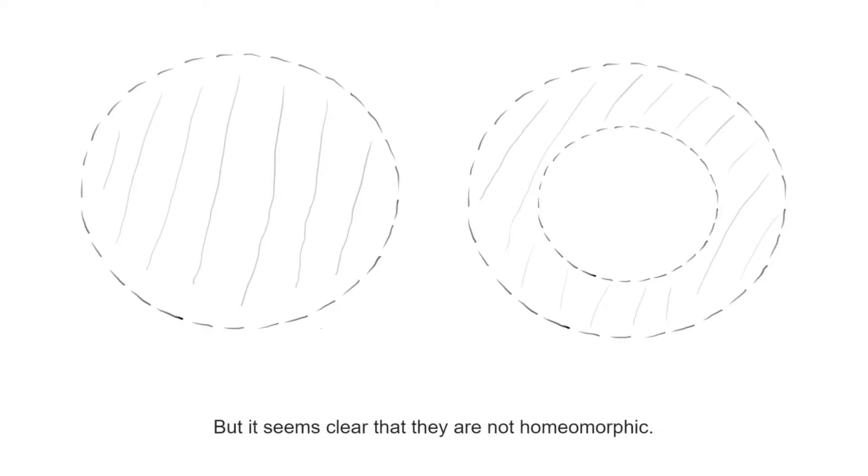However, it is quite intuitive that the two cannot possibly be homeomorphic. Namely, the annulus has this really distinctive hole in the middle. The question is whether we can find a tool that allows us to detect the presence of this hole.